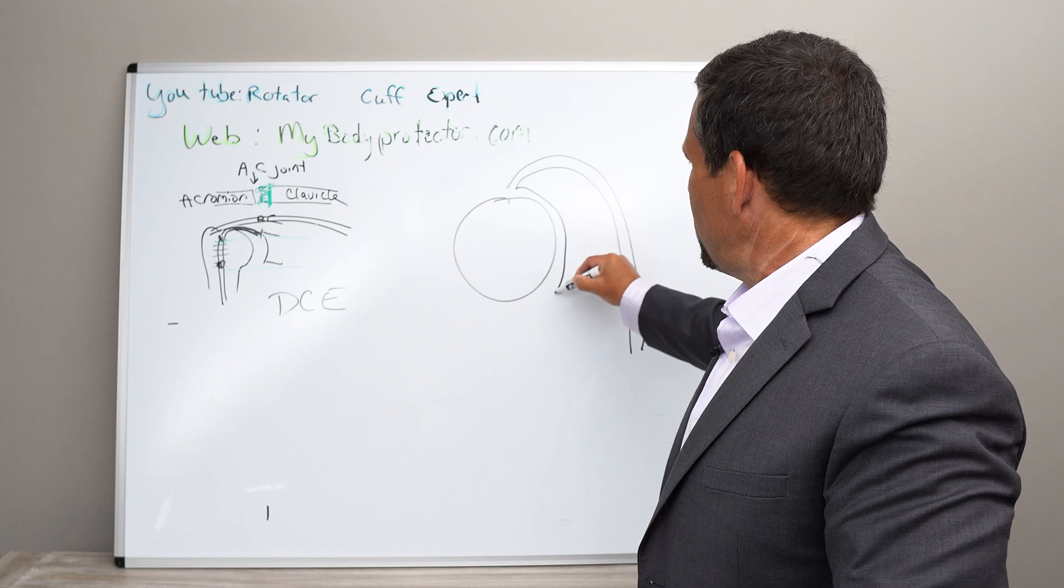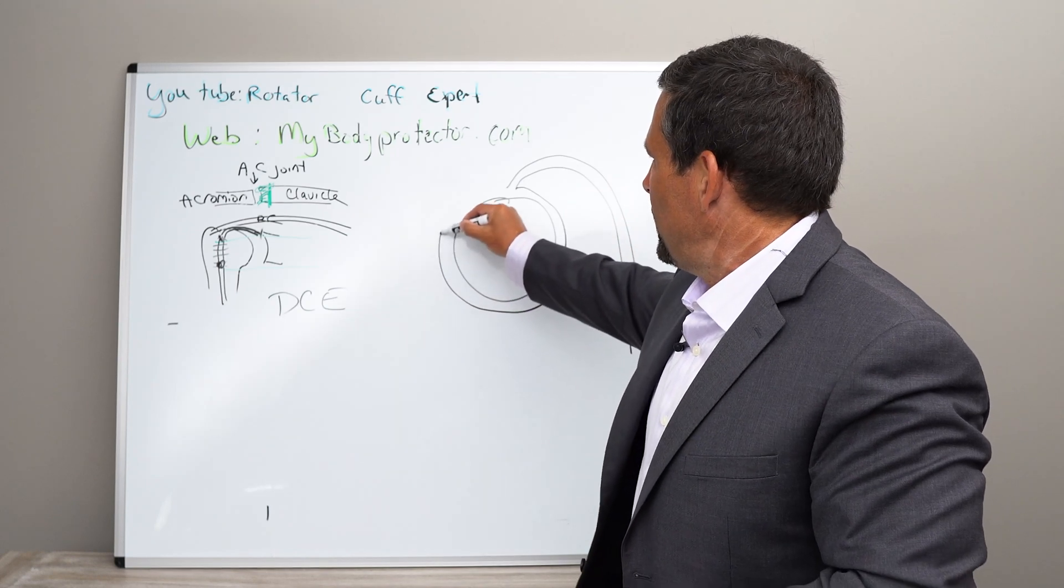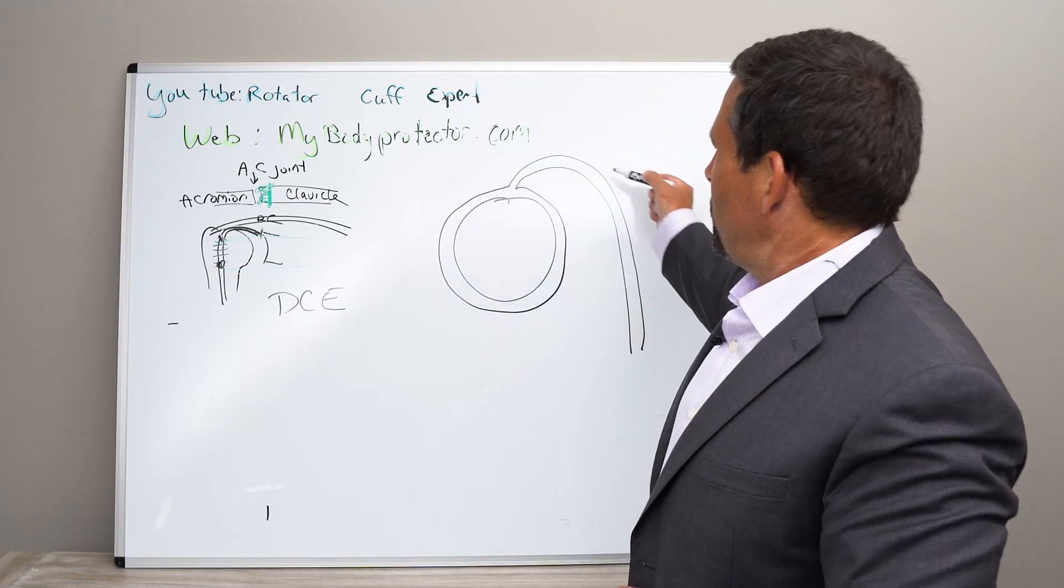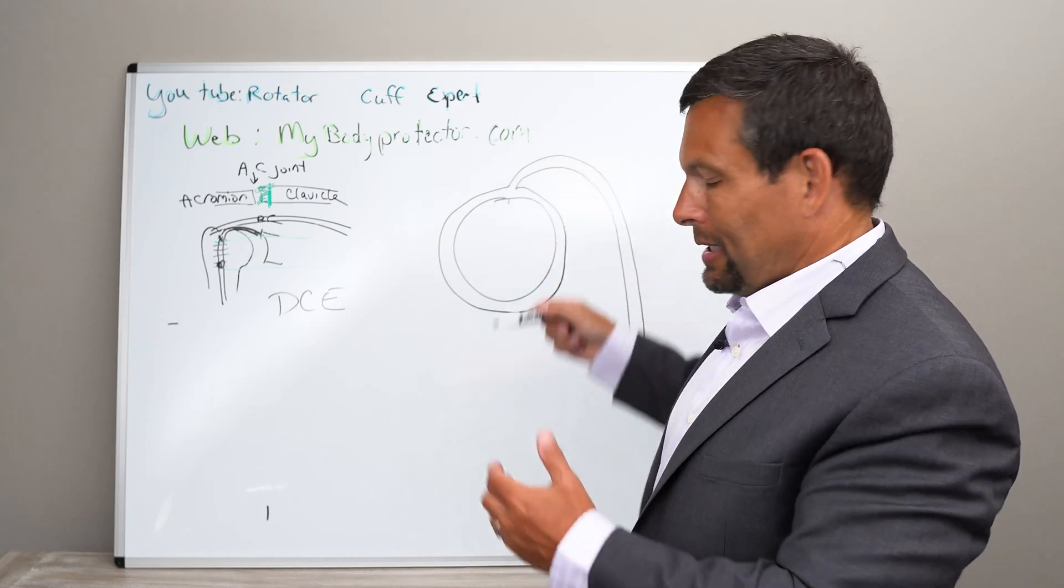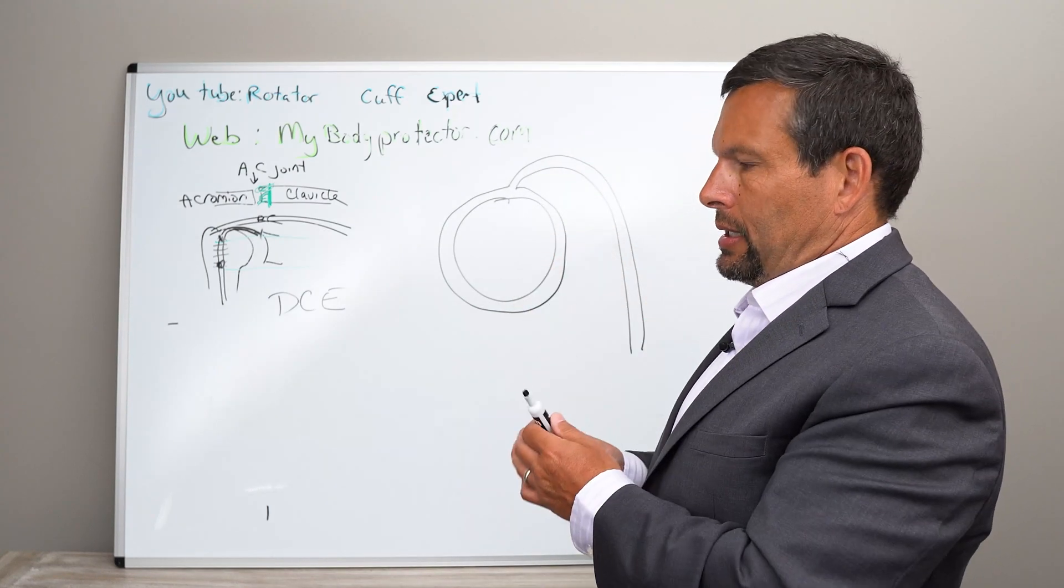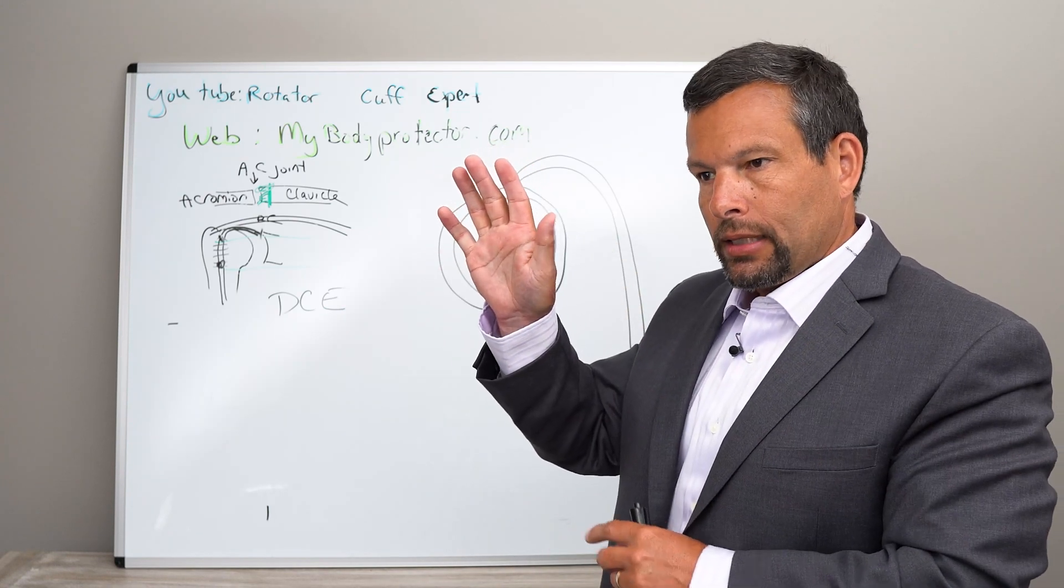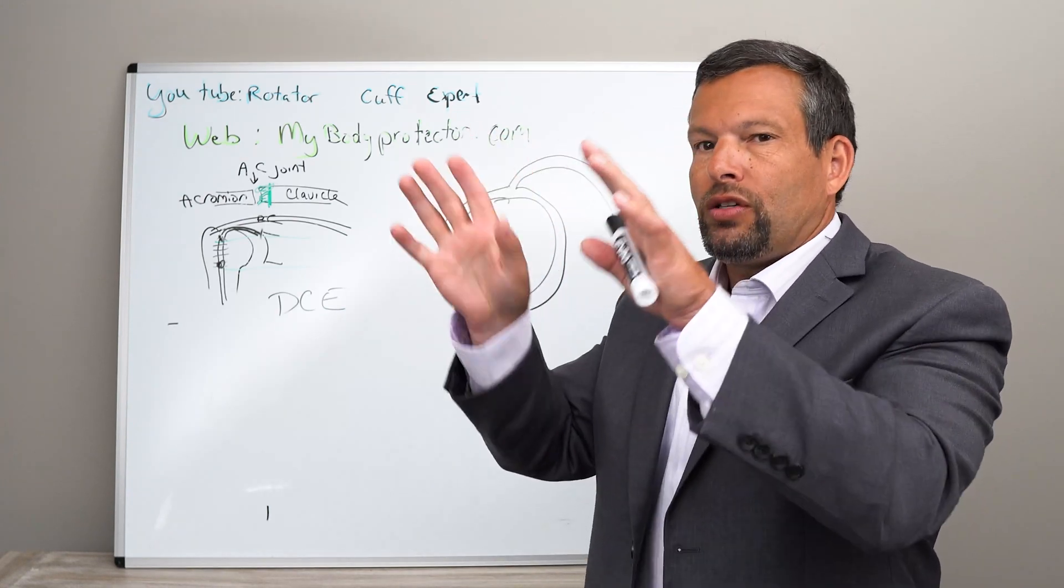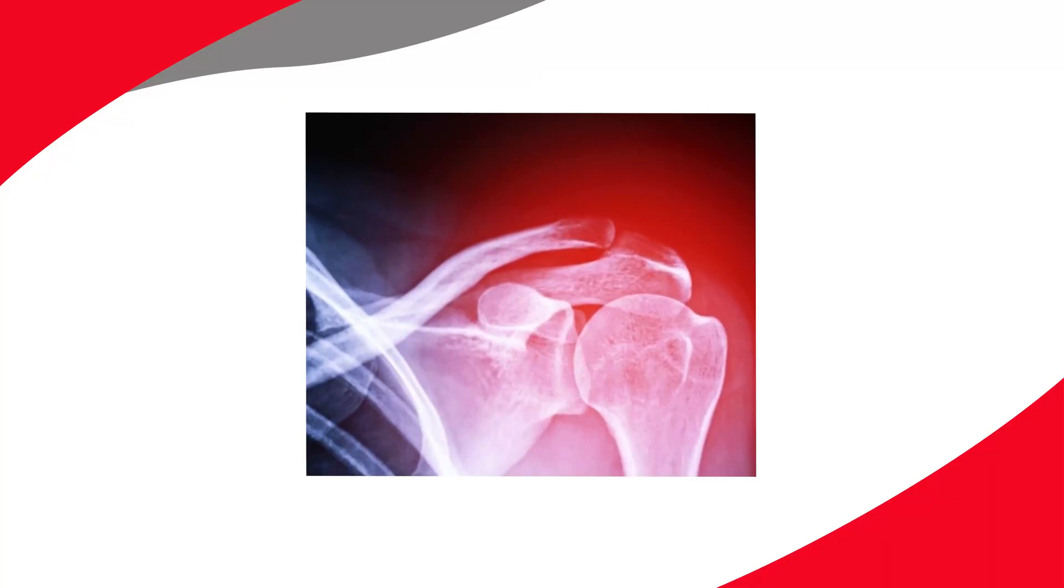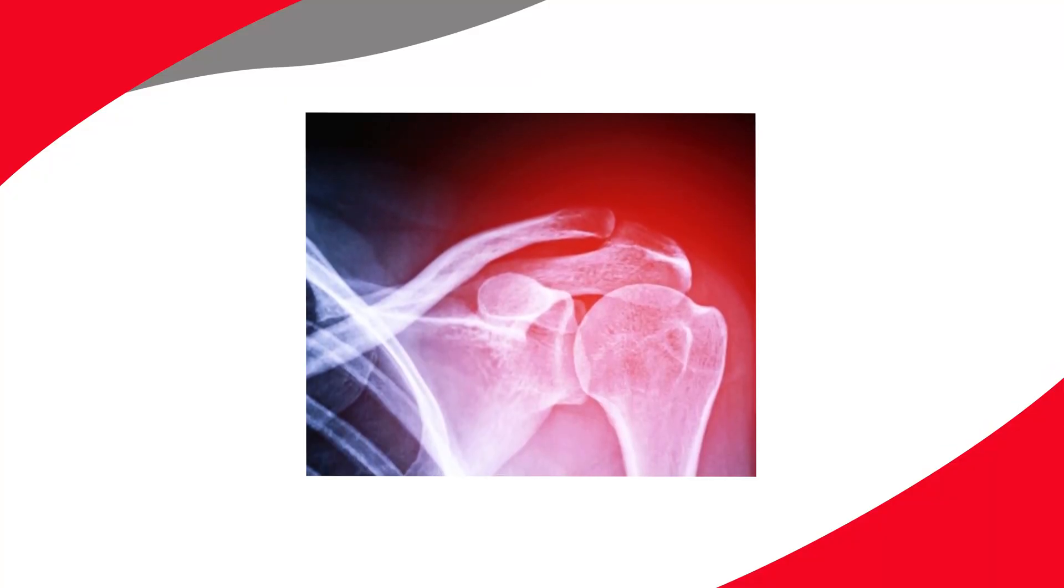And there's the stuff that goes around the socket, and that's called the labrum. So we have the biceps attaching to the labrum. What the labrum does is actually deepens the socket. We say the socket's really shallow, almost like a dinner plate, and the labrum kind of makes it almost like a shallow bowl. So it gives more stability to the shoulder joint itself.